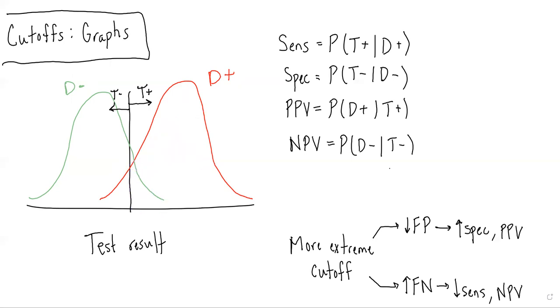And then conversely, NPV, probability of not having the disease given a negative test result, is the area under the green graph to the left of this cutoff, divided by the total area to the left of this cutoff.